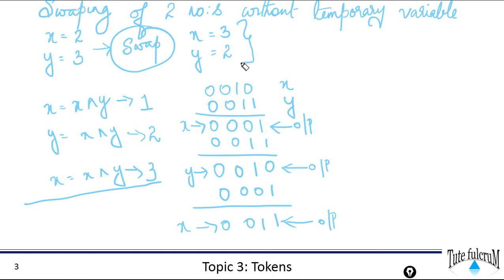So you can easily swap two numbers using the bitwise XOR operator without using a temporary variable. And since these are bitwise operations, the speed of operation will be much better. So this is about the bitwise XOR operator in C++.